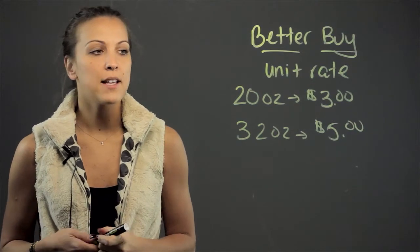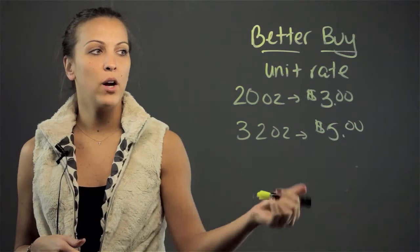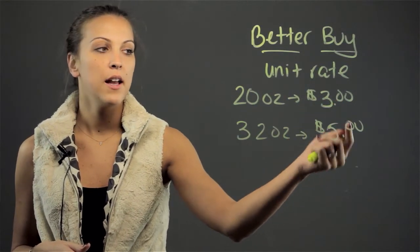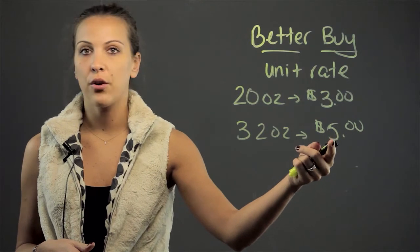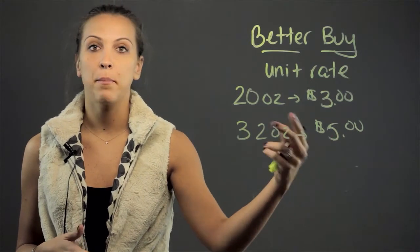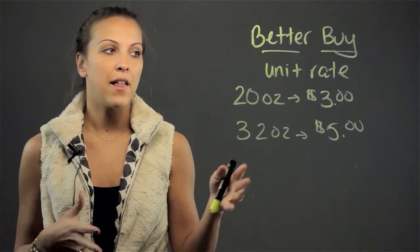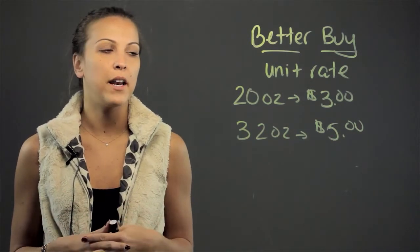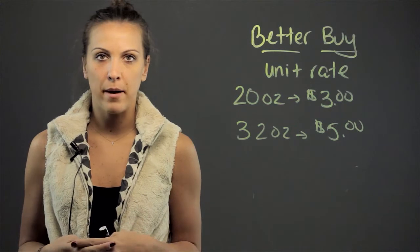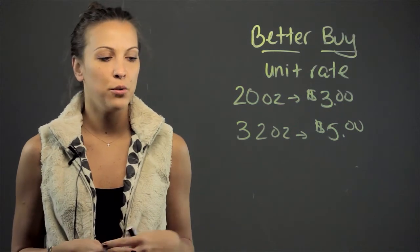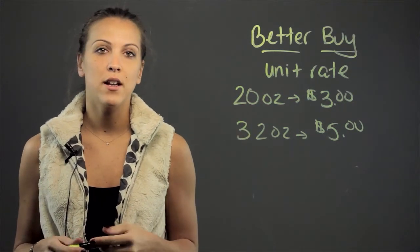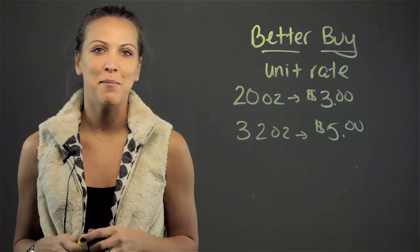You'd be asking the students to find out: what is the unit rate? How much does this one cost per ounce? And how much does the 32-ounce cost per ounce? At that point, they can compare the unit rates to find out which is the better buy. That's how you can use rates and ratios for a project in math.